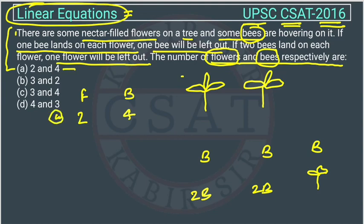If we allot one bee to one flower, because there are two flowers, then two bees are remaining. So the first condition is not getting satisfied — only one bee should remain free, but here two are left. So option A cannot be the answer.